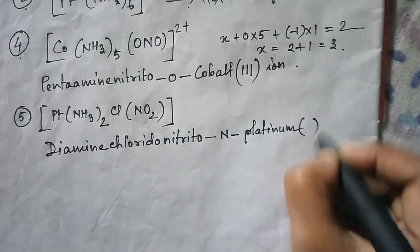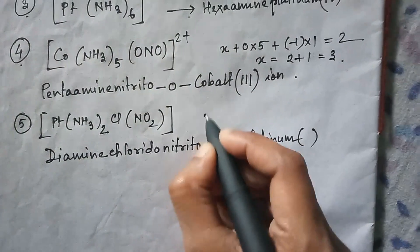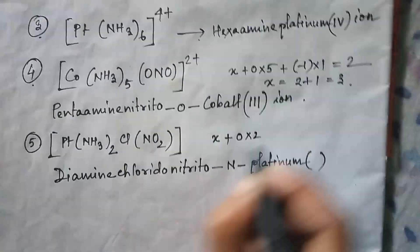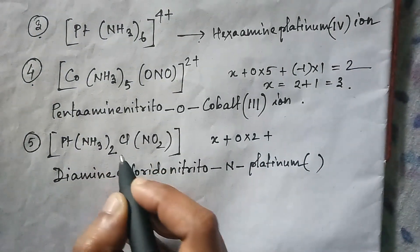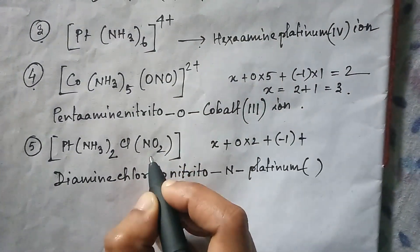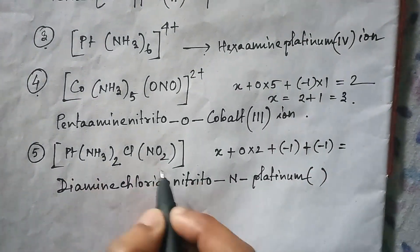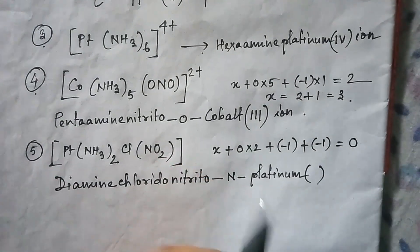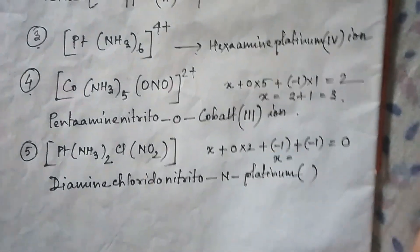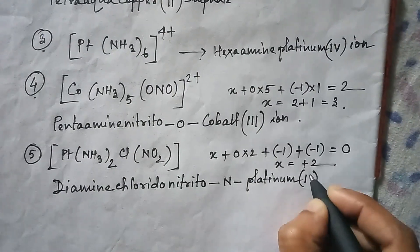Now find the oxidation state of platinum. Let it be X. Ammonia is neutral: 0 × 2. Chlorine is anionic: −1. NO₂ is also anionic: −1. So X + 0 − 1 − 1 = 0, giving X = +2. The platinum oxidation state is II, so the full name is diamminechlorido(nitrito-N)platinum(II).